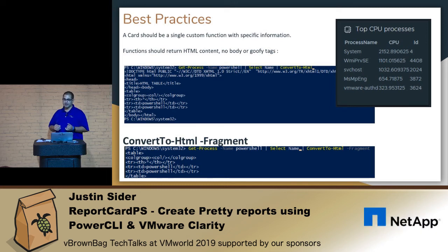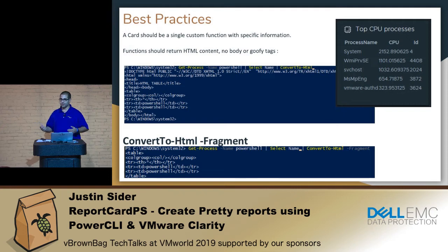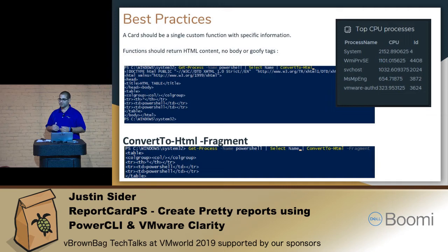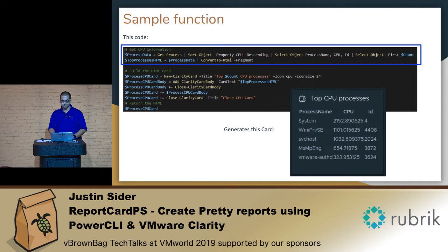Some quick best practices: a card is just a single custom function that's capturing specific information. Keep it simple, stupid — you don't need to pack a whole lot of information. Functions are also going to return just HTML output. It doesn't always have to be a table, but generally a table is pretty much what you're going to be doing — you're going to be querying vCenter, querying some machine, getting that into some kind of format you want. Use ConvertTo-HTML with the -Fragment switch. That removes all of the extra header and footer information from that command. Here's a quick example — the top CPU processes — and this is the card that you'll see on the next slide.